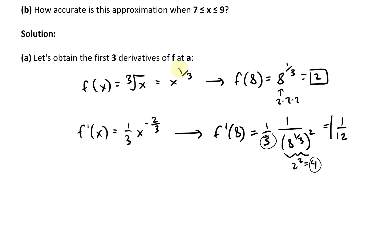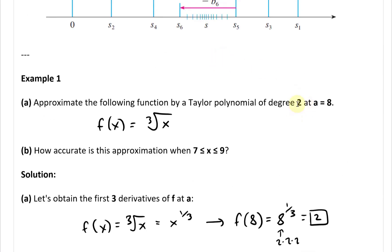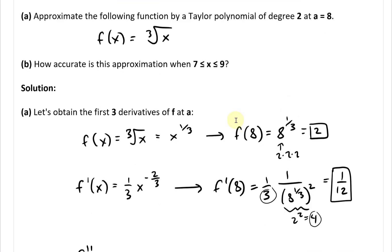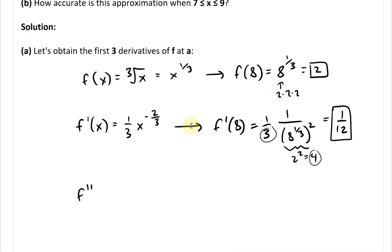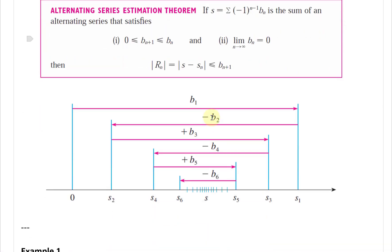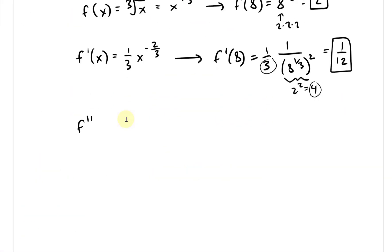We're computing three derivatives because we need degree 2 for the Taylor polynomial, but we also need the n+1 derivative — the third derivative — for the Taylor series error estimation theorem. We always want the one after our target degree, so we need f double prime and f triple prime.